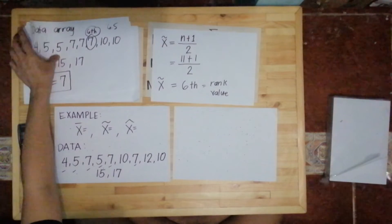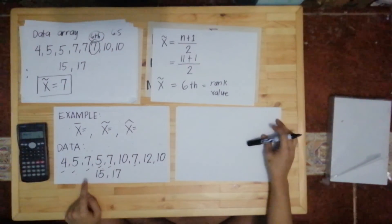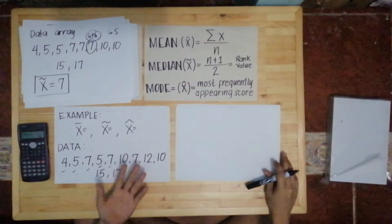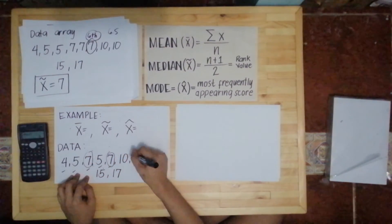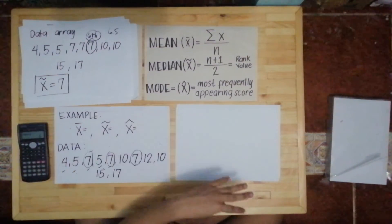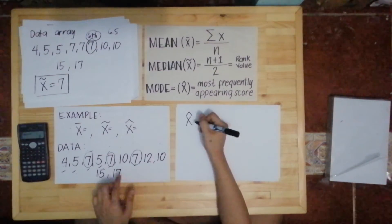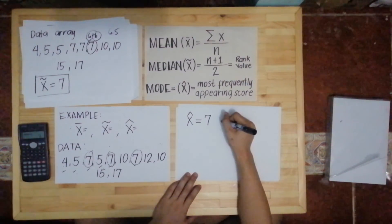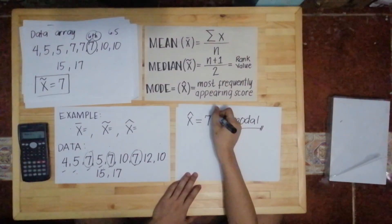Finally, let's get the mode for this data. We look for the most frequently appearing score. 4 does not repeat. 5 repeats twice. 7 repeats three times — that's the data to beat. Since no other value repeats three or more times, 7 is our mode. The mode is 7, and it is classified as unimodal because there is only one mode.